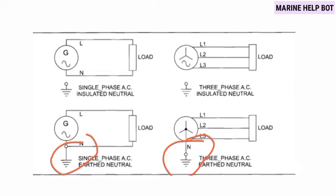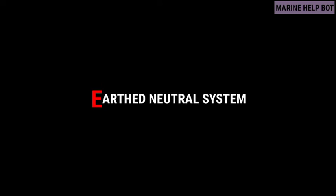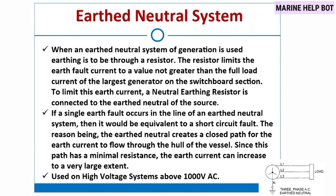Moving towards the next question: what is earth neutral system? When an earth neutral system of generation is used, earthing is done through a resistor. The resistor limits the earth fault current to a value not greater than the full load current of the larger generator on the switchboard section. To limit this earth current, a neutral earthing resistor is connected to the earth neutral of the source. In the earth neutral system, we have a resistor known as the neutral earthing resistor, which limits the earth fault current to a value not greater than the full load current.